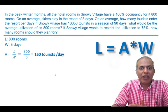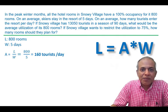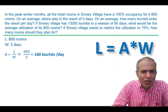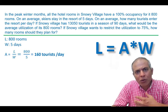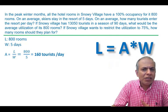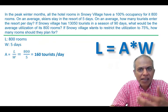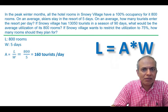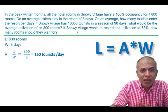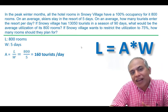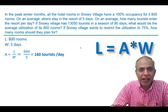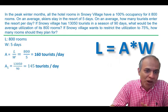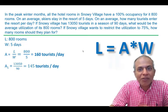For the next part, they say there are 13,050 tourists in a season of 90 days. Pause and think about what this tells us. It's essentially telling us how many tourists actually arrive at Snowy Village per day. So I can calculate my actual arrival rate, which I call A1, as 145 tourists per day.